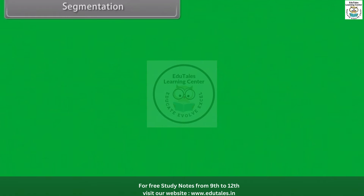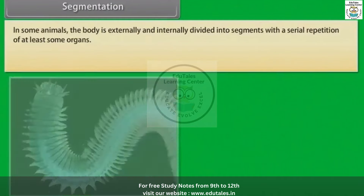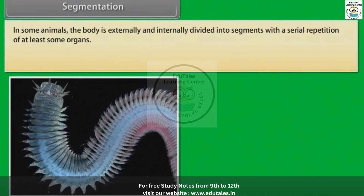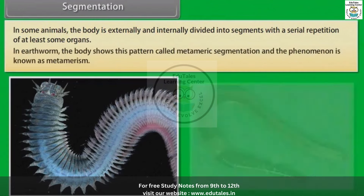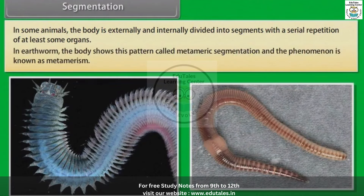Segmentation: In some animals, the body is externally and internally divided into segments with a serial repetition of at least some organs. In the earthworm, the body shows this pattern called metameric segmentation, and the phenomenon is known as metamerism.